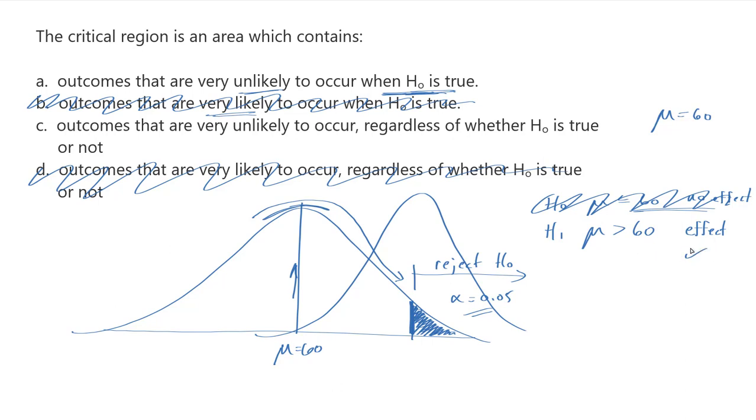So our answer here is going to be A because we're looking in the critical region at unlikely scores or unlikely sample results. And it is important that we have a look at whether or not the null hypothesis is true. We're not going to say that it's regardless of whether or not the null is true.